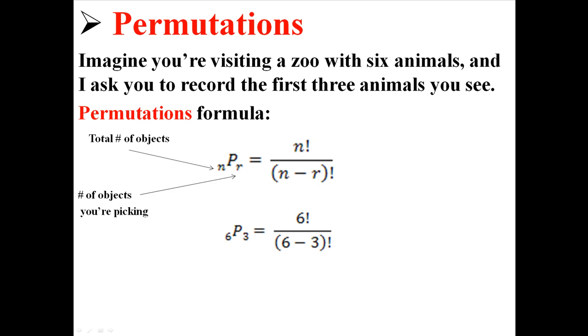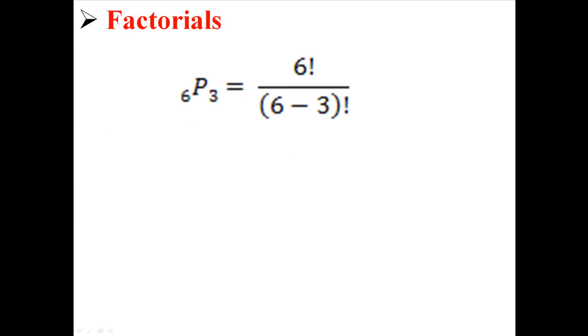Now you see these exclamation points next to the numbers, and you might not know what that means. Those are factorials. If you see something with an exclamation mark next to it, it means you're going to multiply it downwards all the way to one. So 6 factorial is 6 times 5 times 4 times 3 times 2 times 1, and 4 factorial would be 4 times 3 times 2 times 1.